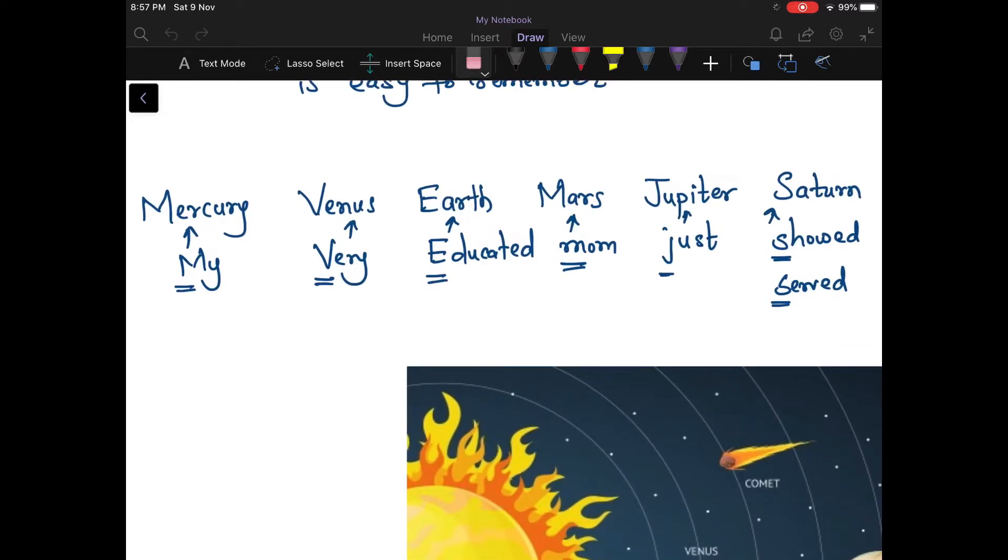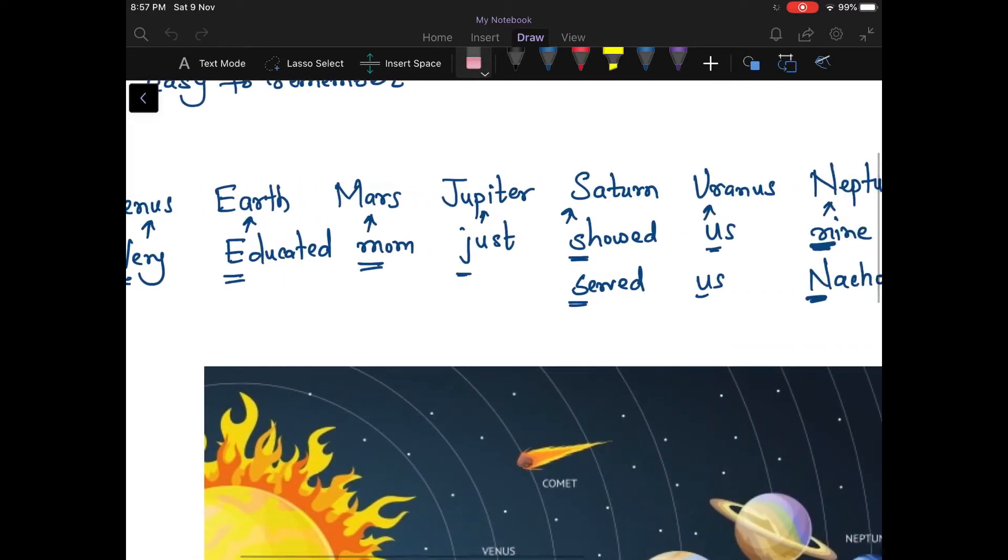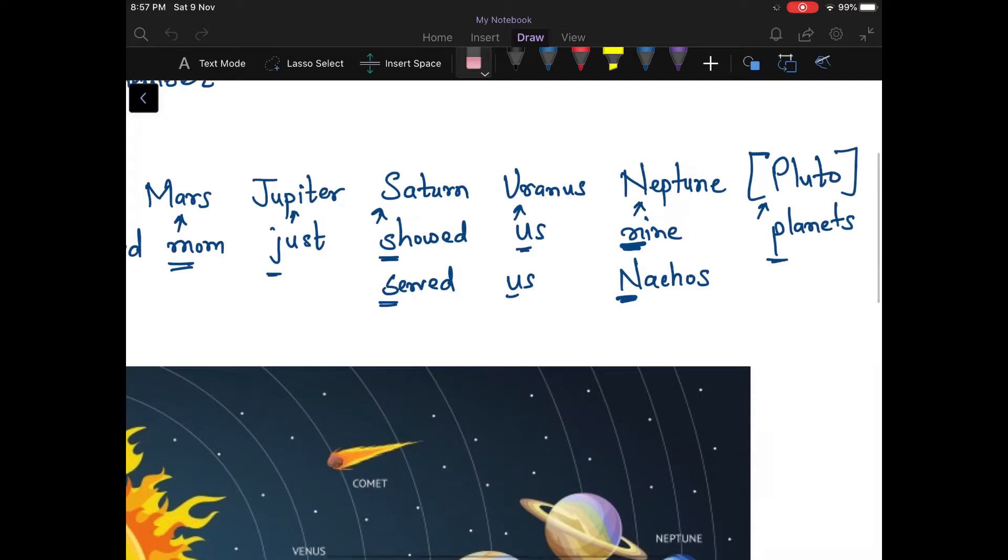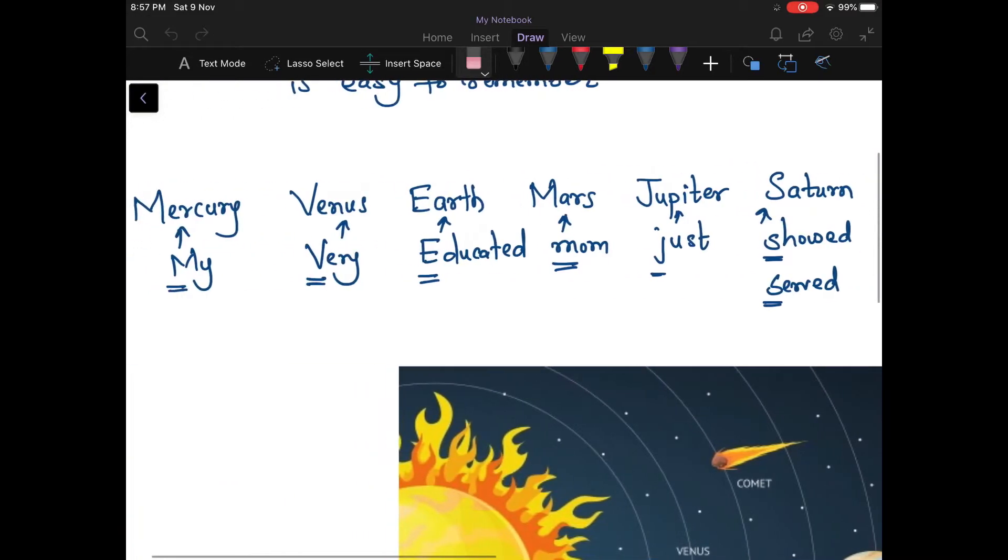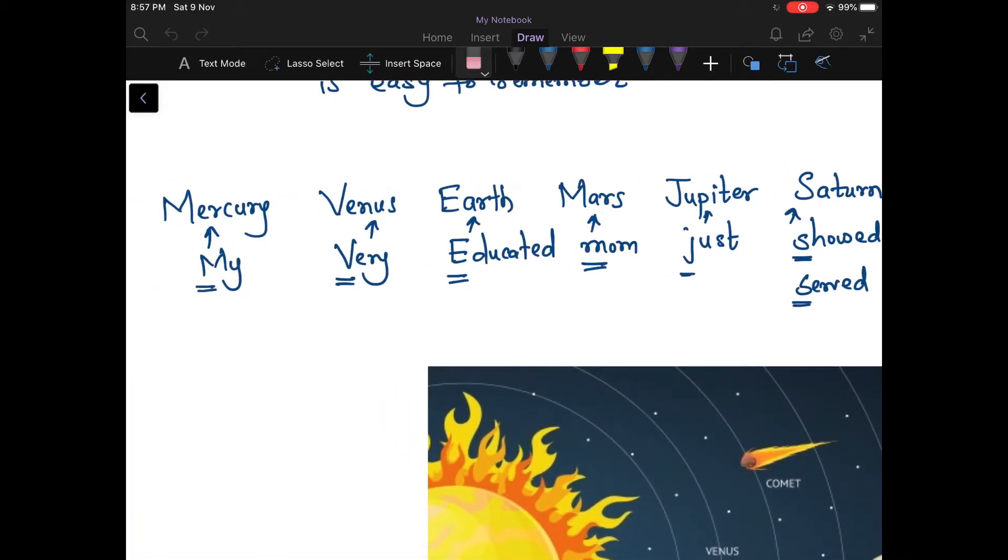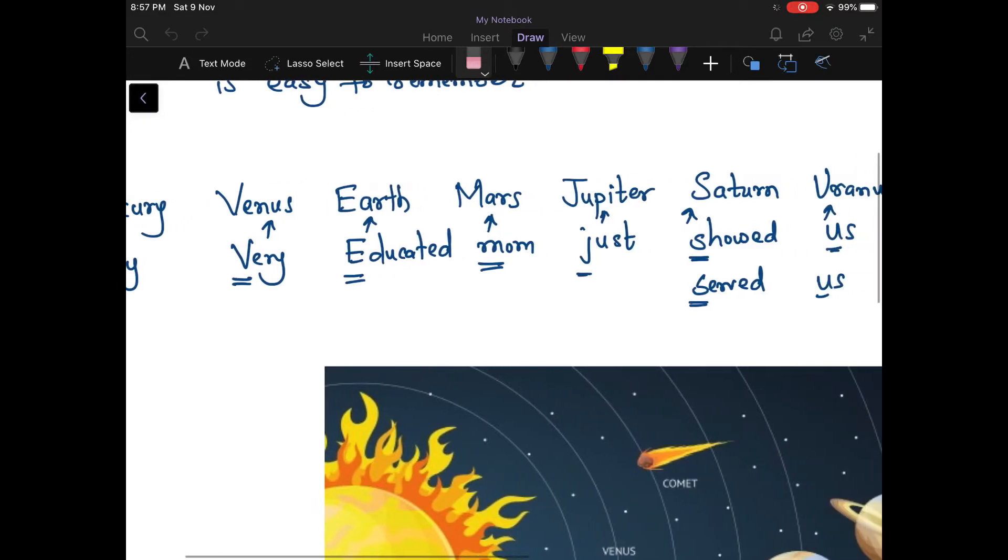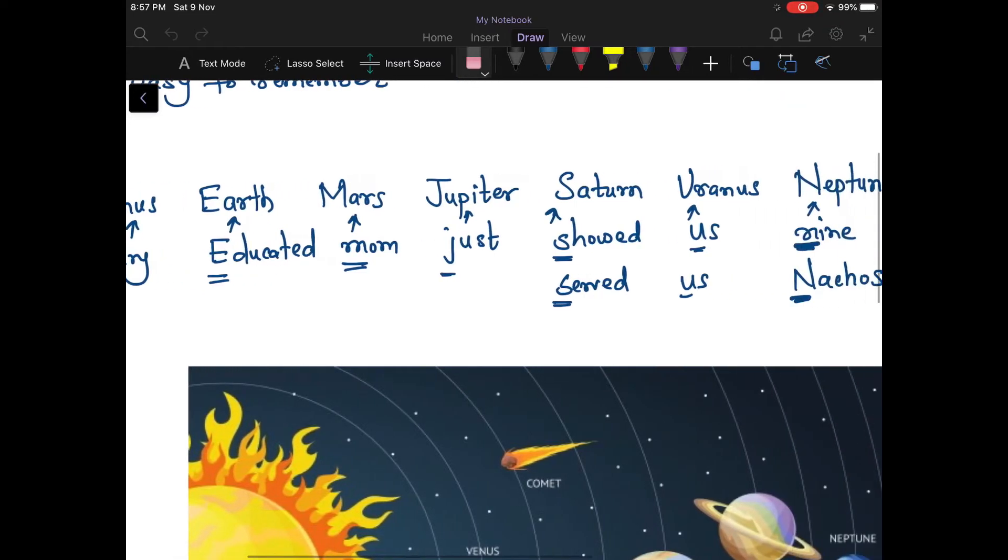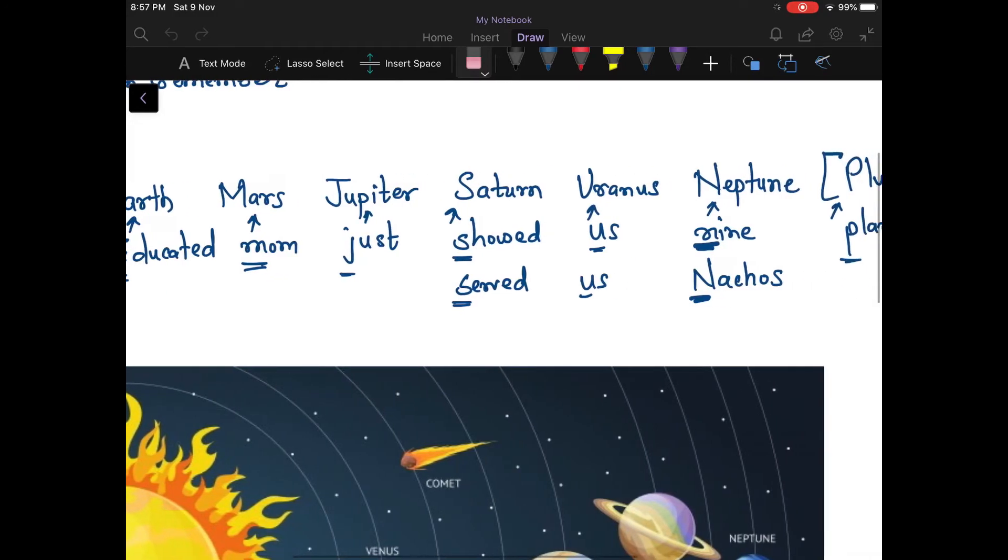The trick is that the first letter of every word in this sentence gives you the hint. For example, M in 'my' stands for Mercury, V in 'very' stands for Venus, E in 'educated' stands for Earth, M in 'mom' stands for Mars, J in 'just' stands for Jupiter, S stands for Saturn, U stands for Uranus, and N in 'nachos' stands for Neptune.